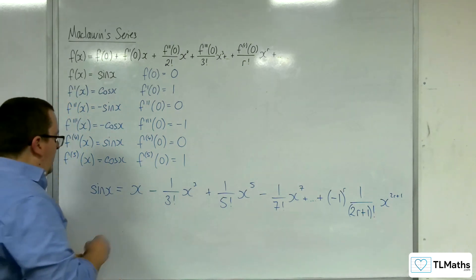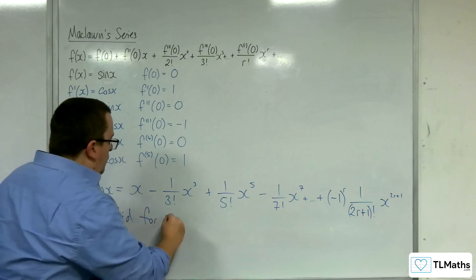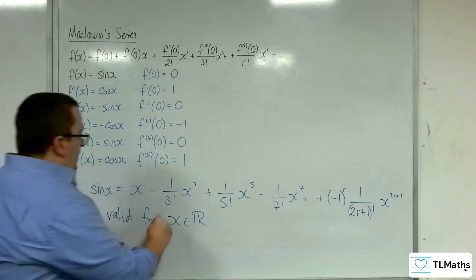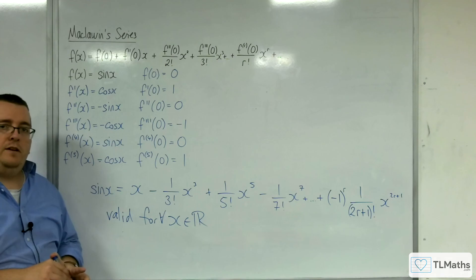Now, as for what values it is valid for, sine x is valued for all real values. So if you want to say for all, then the upside down a can be included here if you like.